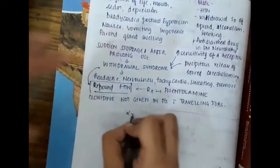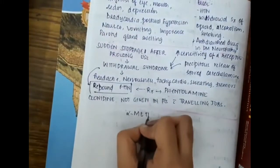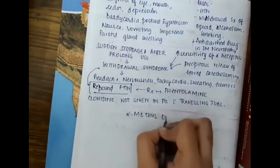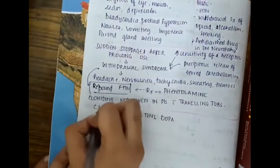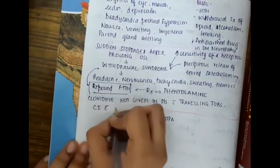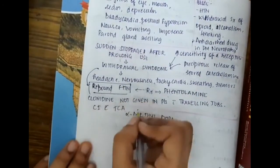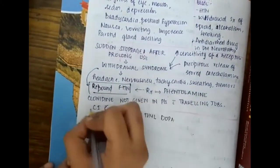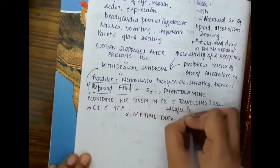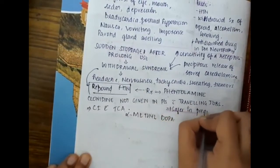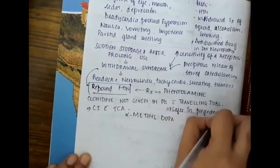Clonidine is contraindicated with tricyclic antidepressants and is safer in pregnancy.